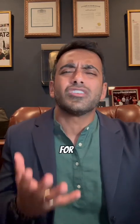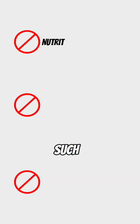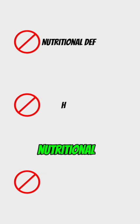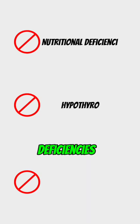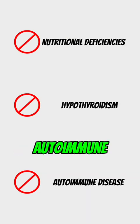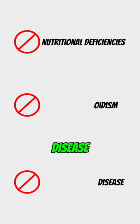Next, you want to accurately assess the patient by evaluating for alternative causes of cytopenia, such as nutritional deficiencies, hypothyroidism, and of course autoimmune disease.